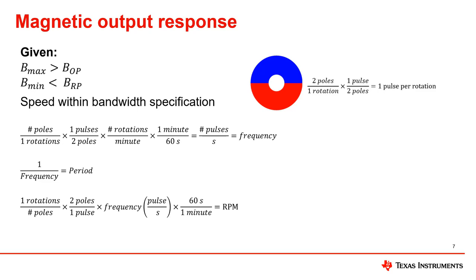The magnet shown here has two poles, which results in one pulse per rotation when using a single latch. If the magnet had four poles, that would result in two pulses per rotation. Using this information, the output frequency can be calculated by dividing the number of pulses per rotation by seconds. From there, RPM can be found using the output frequency previously calculated and the number of pulses per rotation.